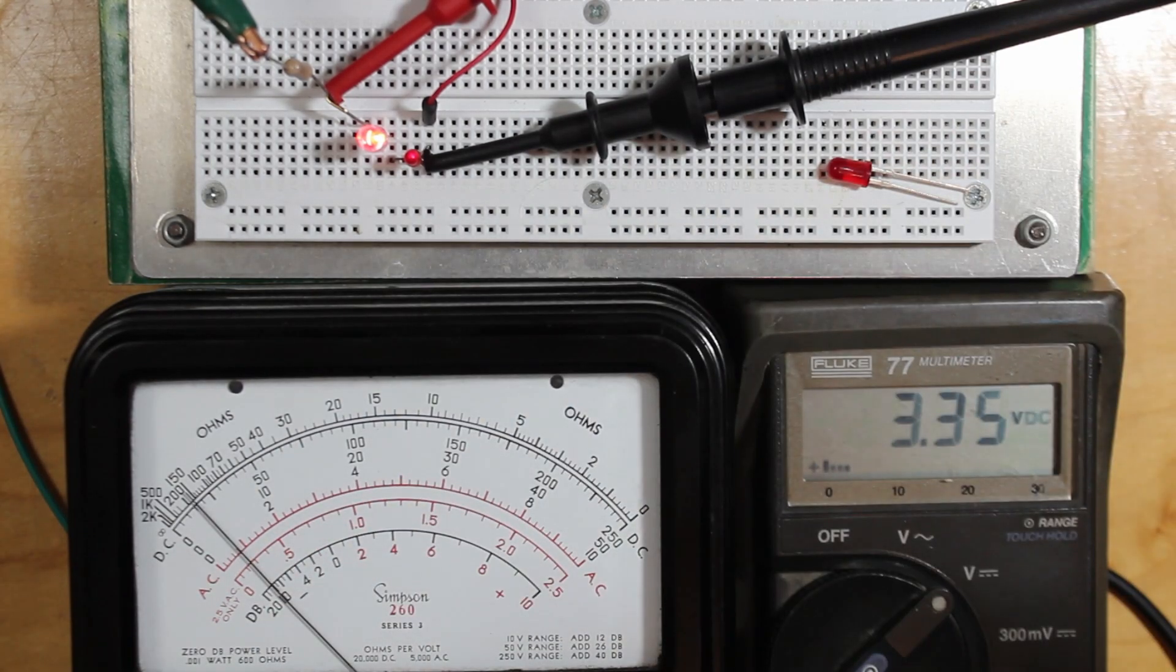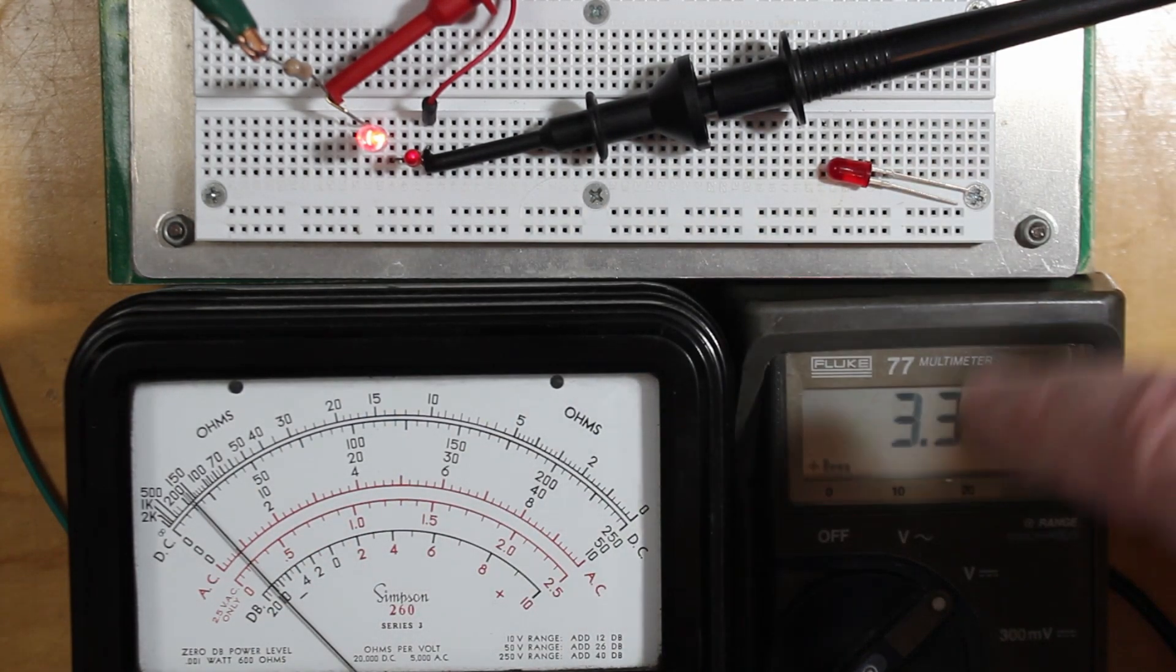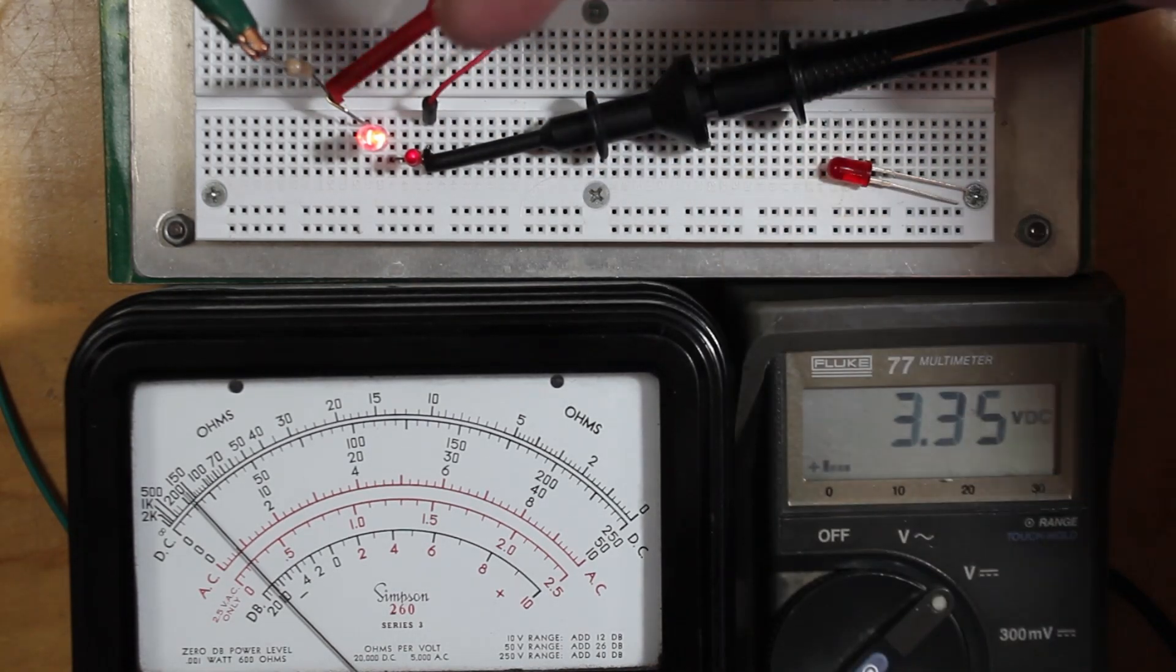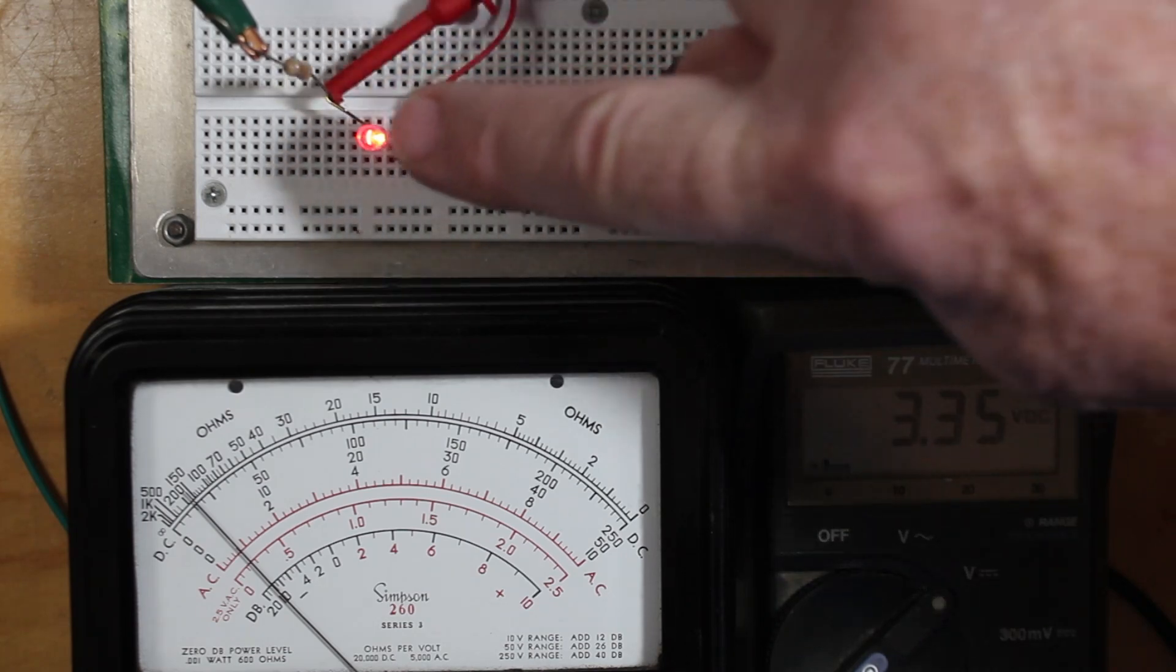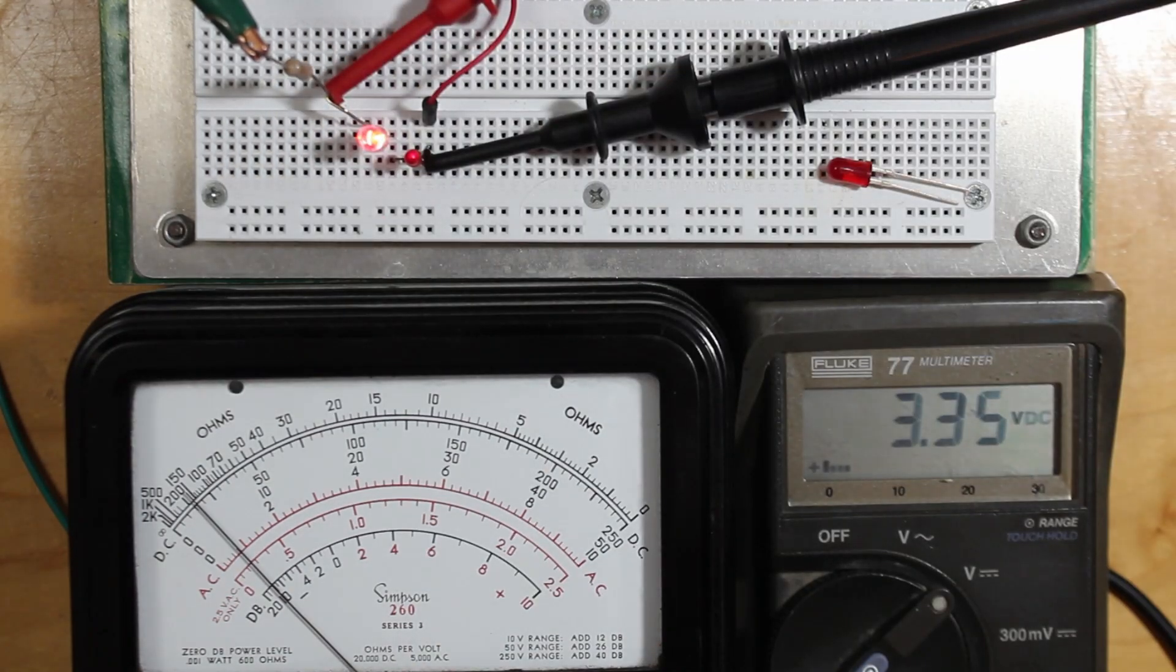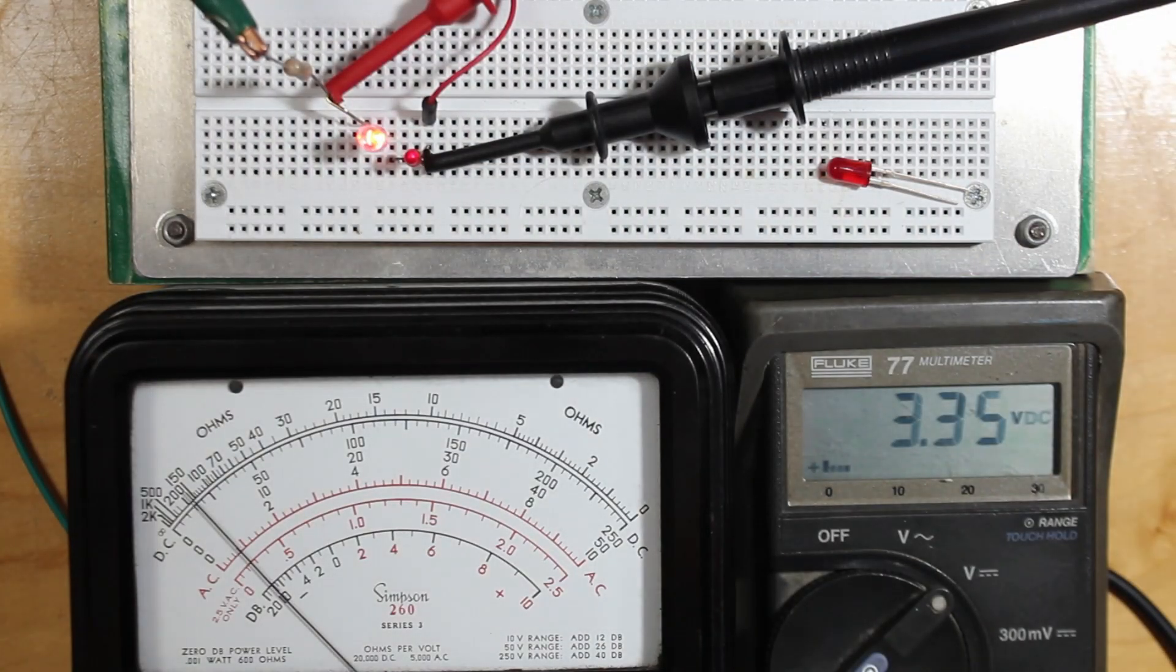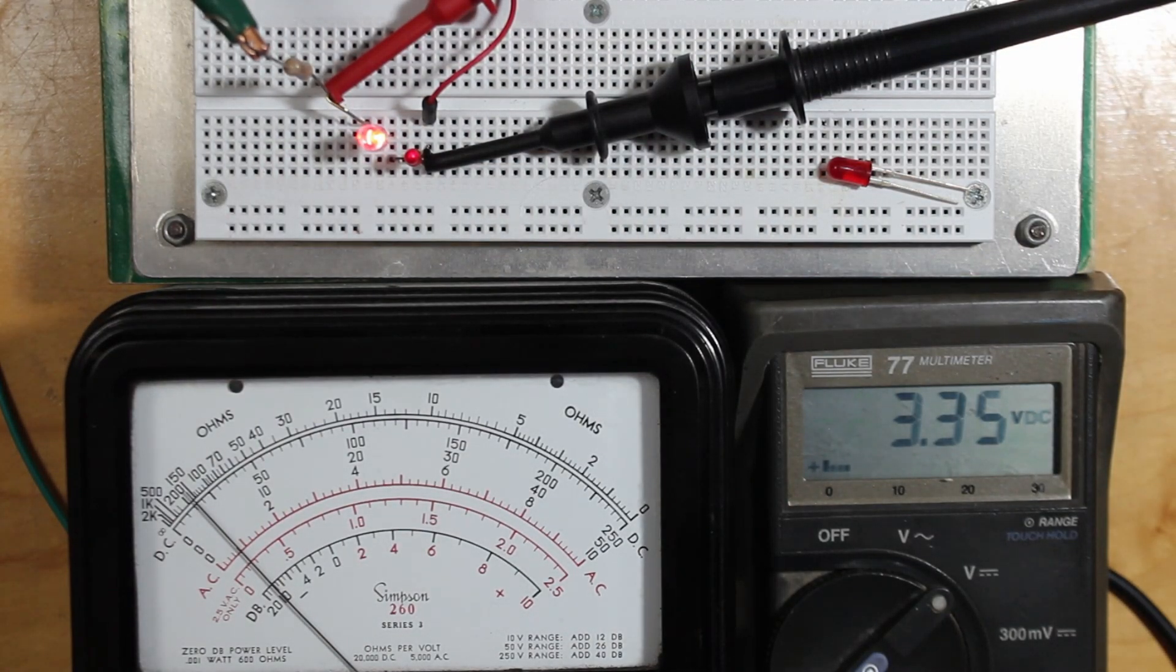We can see on the meter here what voltage we're actually applying to the two diodes. There's a 150-ohm resistor right here that we're using for current limiting, so we don't just cook anything.